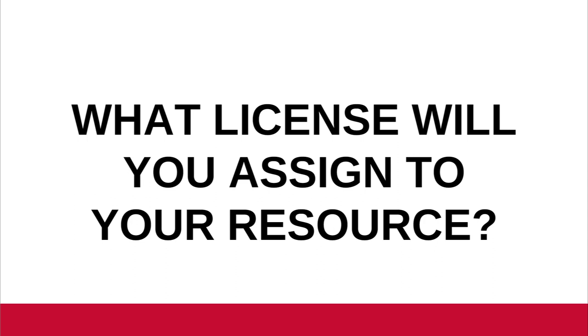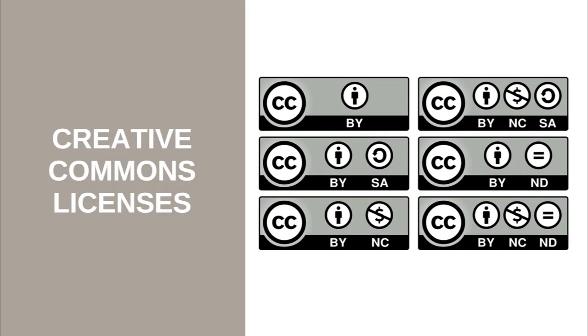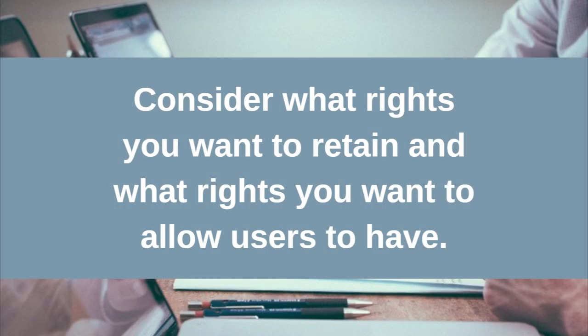The fourth consideration you need to take into account when planning to create an open educational resource is the open license you'll be assigning to your resource. The most common type of open license attached to an OER, Creative Commons licenses, come in six basic types, and each license allows users to have certain permissions when reusing a resource. Before you put out a new OER, it's important that you consider what rights you want to retain over your resource and what rights you want to allow users to have. For example, do you want users to be able to update or edit your resource? These considerations will affect what license you give your resource once it's been created.